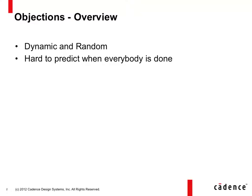For example, it's very hard to predict when every member that participates in a test is done. There are a lot of components, a lot of activity, all running in parallel. When are they all done processing? When is it safe to end a test?